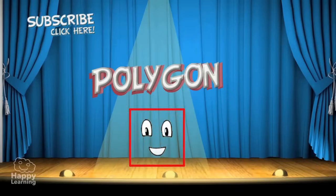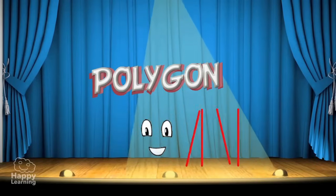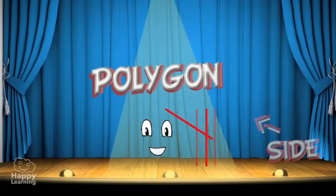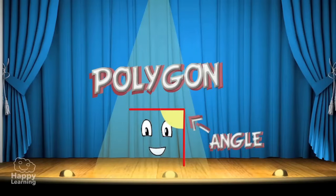A polygon is made of several elements. The side is each one of the segments that form the polygon. The vertex is the point where two sides meet — a corner — and the angle is the space formed between two sides that meet at a point.